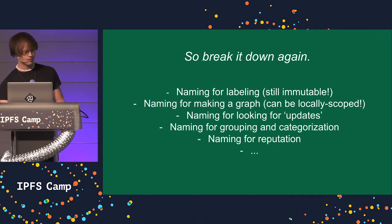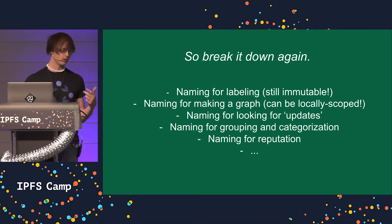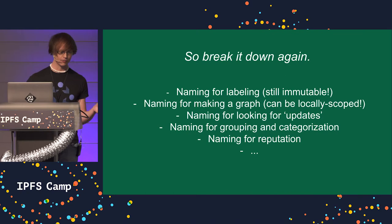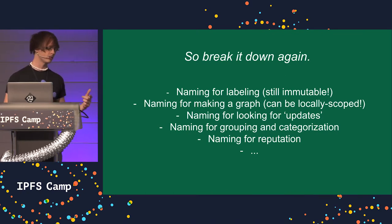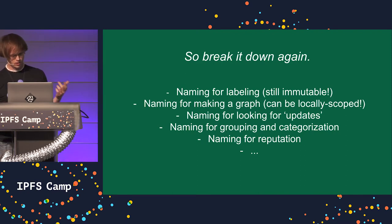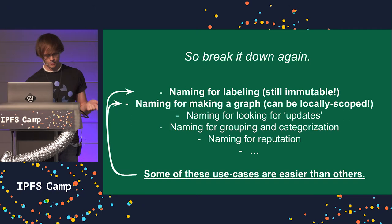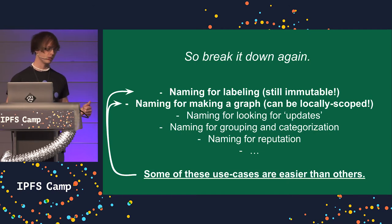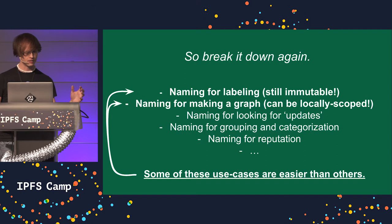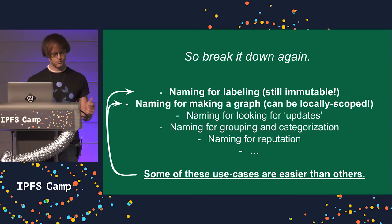There are lots of different kinds of naming. Sometimes I use naming for labeling. Sometimes I want to name nodes in a graph just to identify different nodes, even when they're topologically identical. Sometimes naming means looking for updates — the latest thing with some name. Sometimes I want to use naming with a prefix pattern for grouping and categorization. Sometimes I'm trying to use it for reputation. All these are very different user stories, and by breaking them down, some may be much easier. For example, naming just to label things can still be an immutable thing — you only need unique names within the context of the graph.